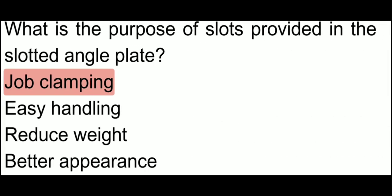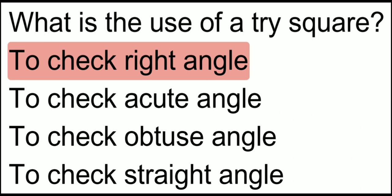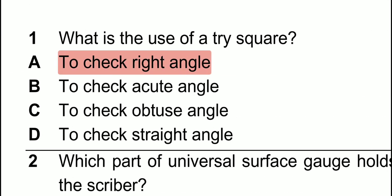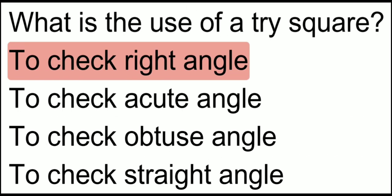What is the purpose of slots provided in the slotted angle plate? The slots in the slotted angle plate are used for clamping the job. What is the use of a trisquare? The trisquare is used to check right angles. Friends, today we discussed 25-plus MCQs. Thanks for watching.